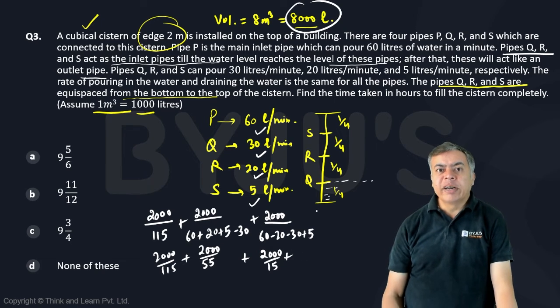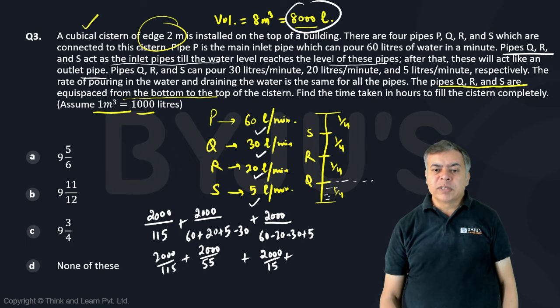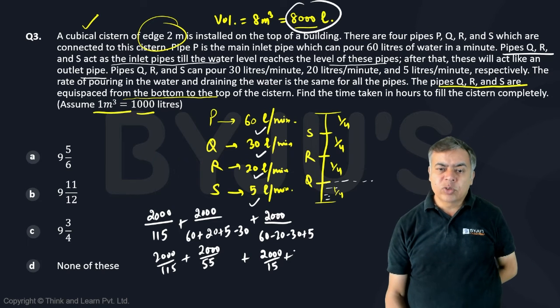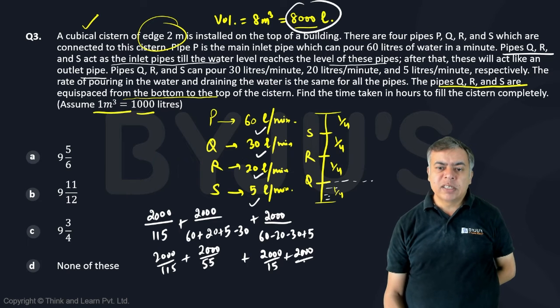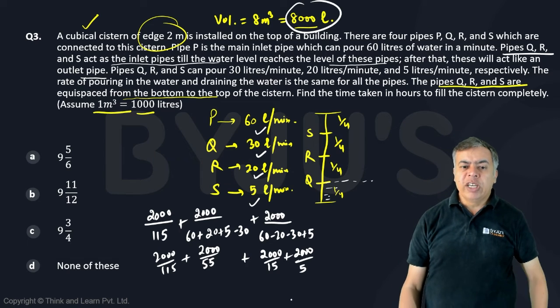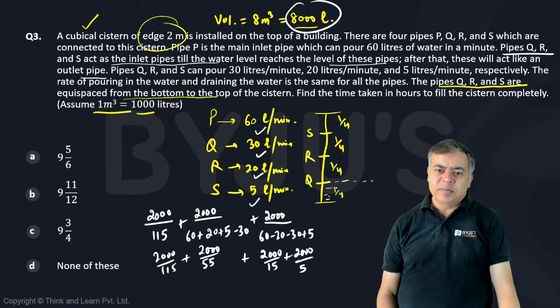And the last, when it reaches S, it will all become negative 20, 30 and 5. So it will become 2000 by 60 minus 20 minus 30 minus 5. So that will become 2000 by 5. So these many minutes will be my answer.